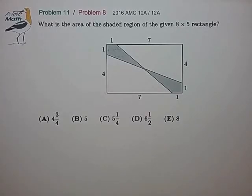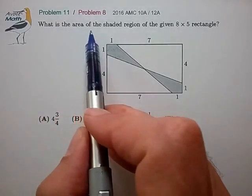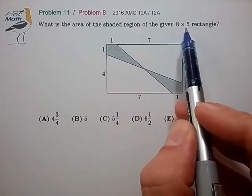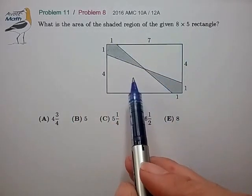Hi, this is problem 11 from the AMC 10A. What is the area of the shaded region in the given 8 by 5 rectangles shown?